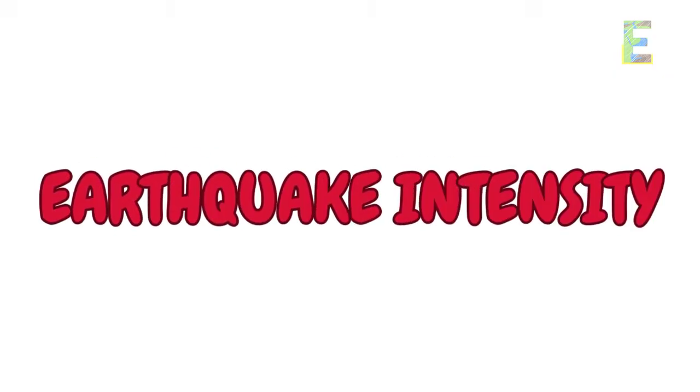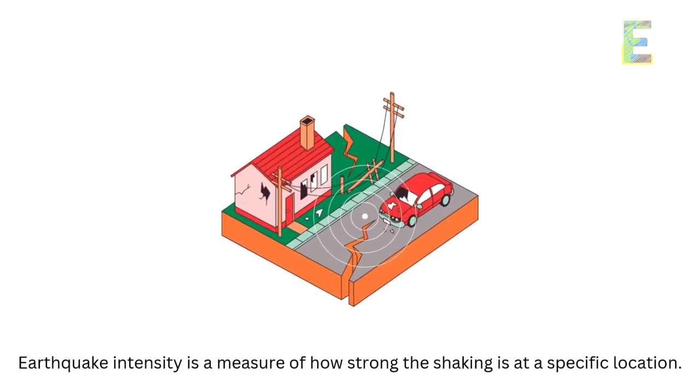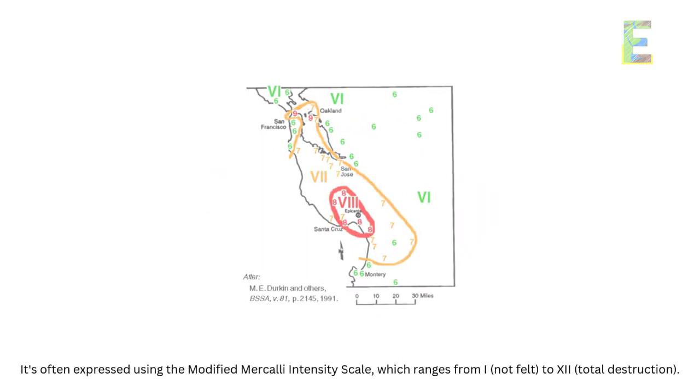Earthquake intensity is a measure of how strong the shaking is at a specific location. It's often expressed using the modified Mercalli intensity scale, which ranges from I, not felt, to 12, total destruction.